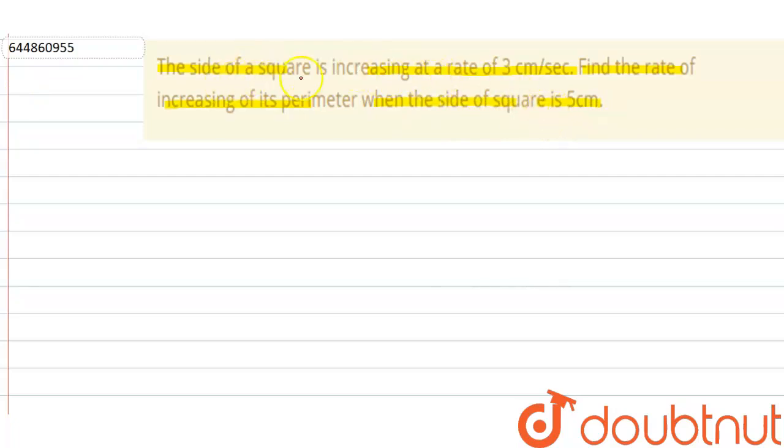If I assume that side is equal to x, so dx upon dt is given to us, that is equal to 3 centimeter per second. Okay, now side is also given to us, that is equal to 5 centimeter. So this is 5 centimeter.